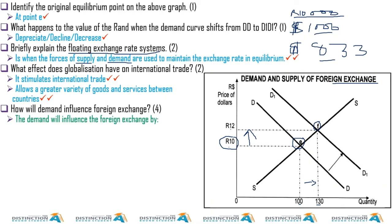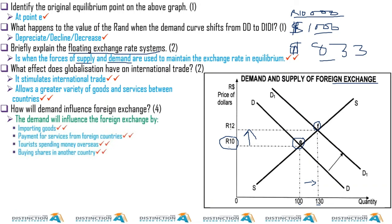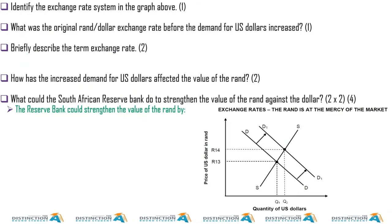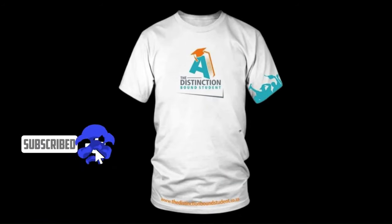Demand will influence foreign exchange through importing goods, payment for services from foreign countries, tourists spending money overseas, buying shares in other countries, and many more activities. Anything involving money going outside the country — whether it's shares, property, or other payments — influences demand for foreign exchange.